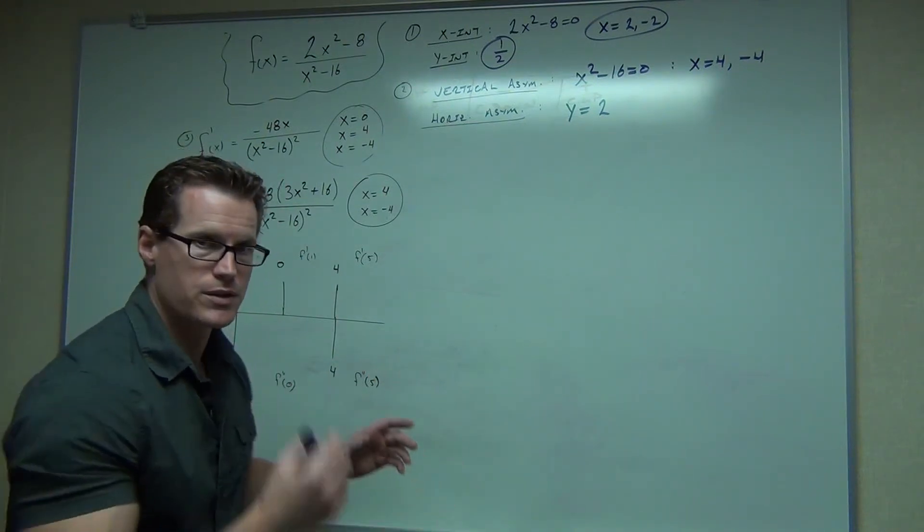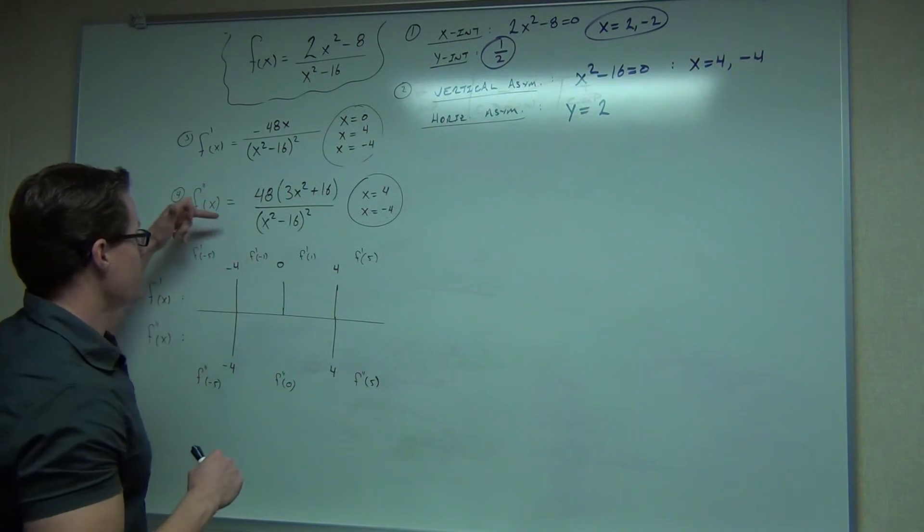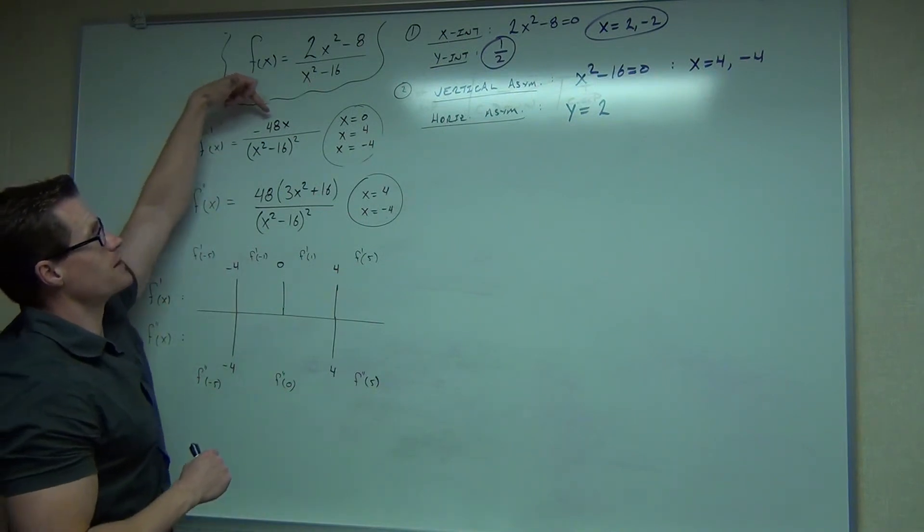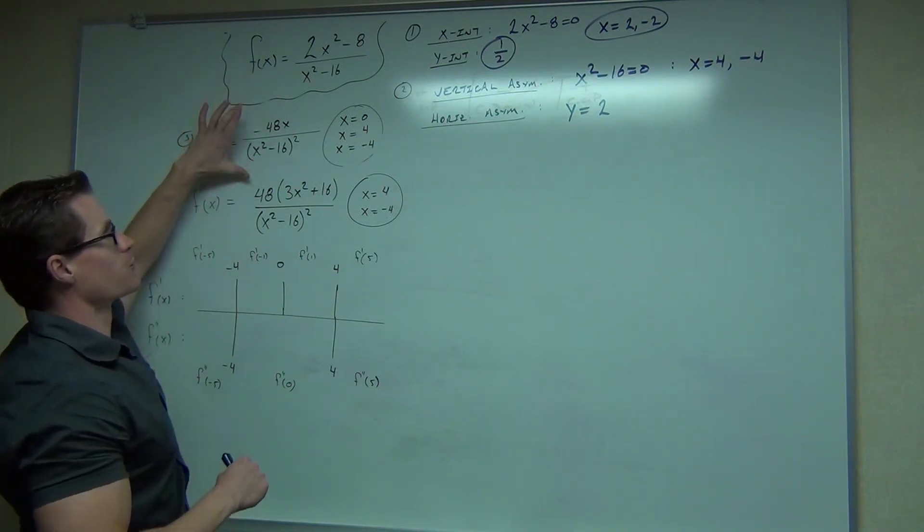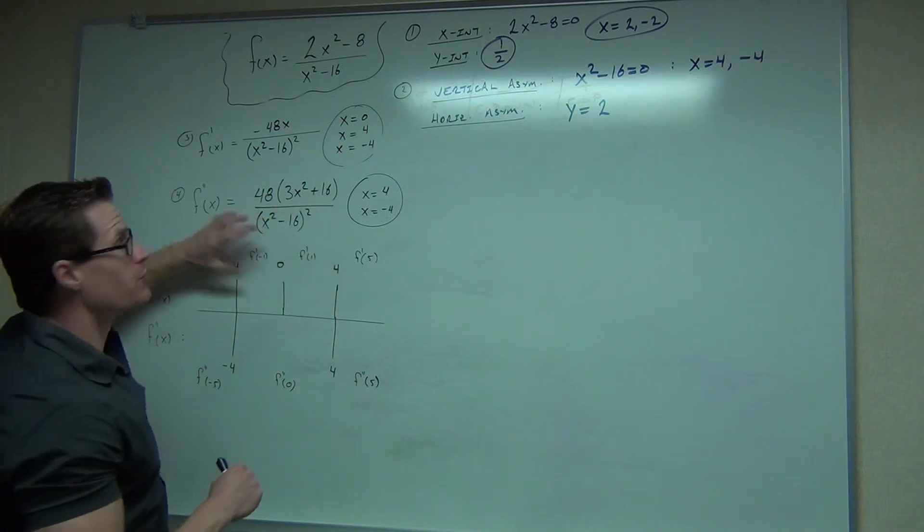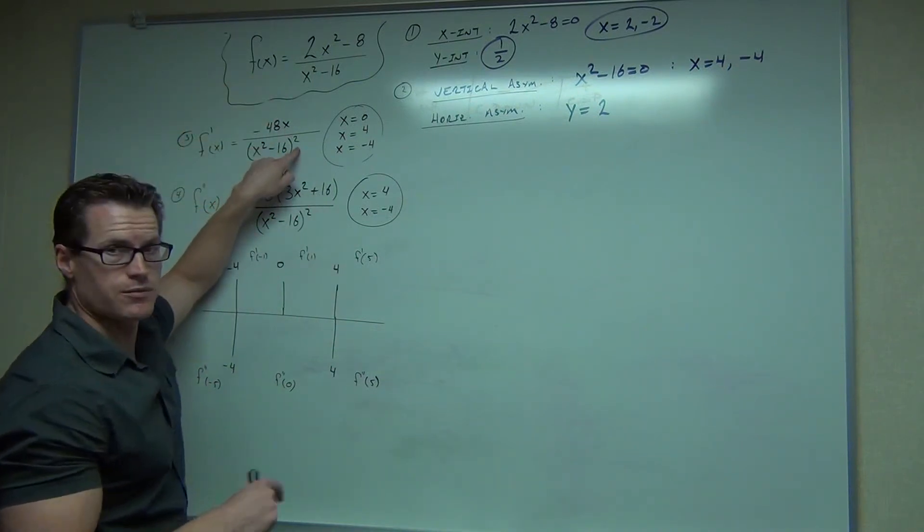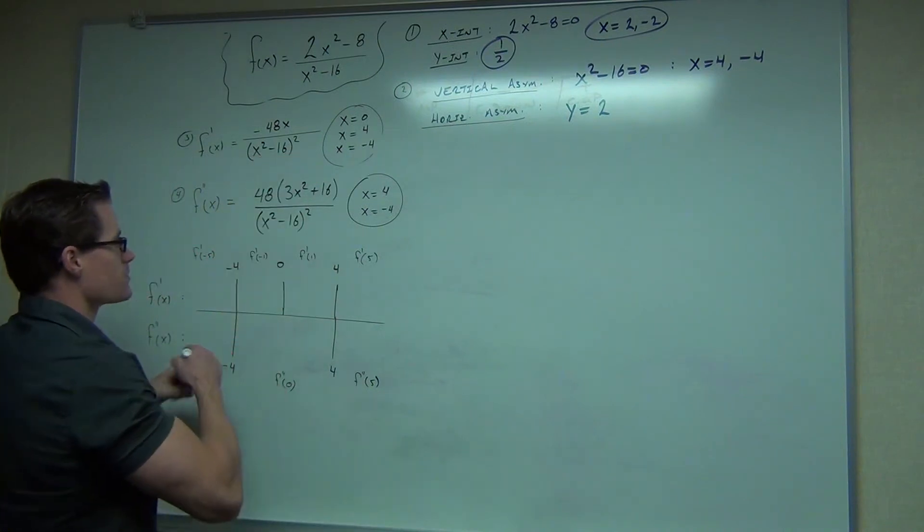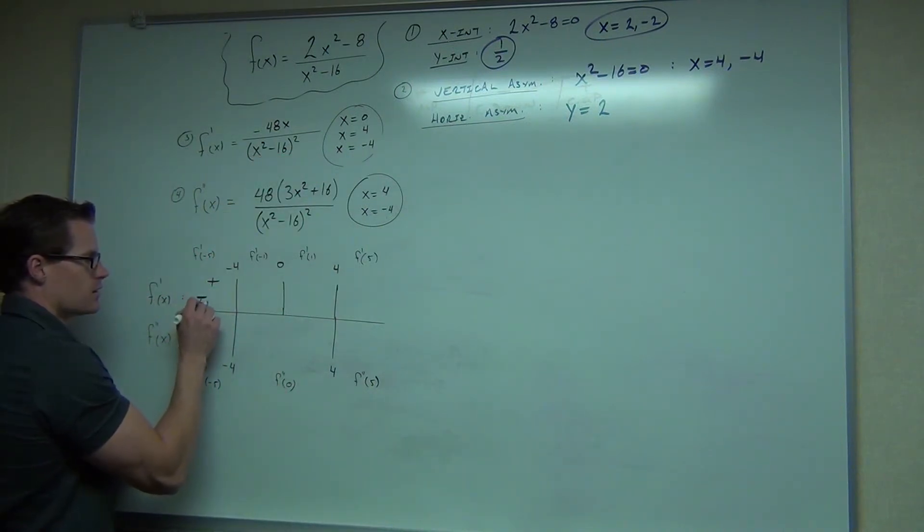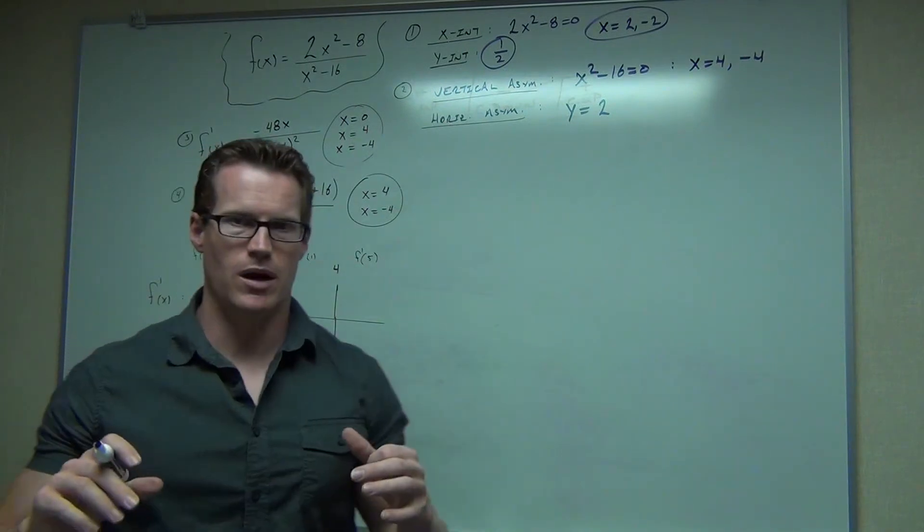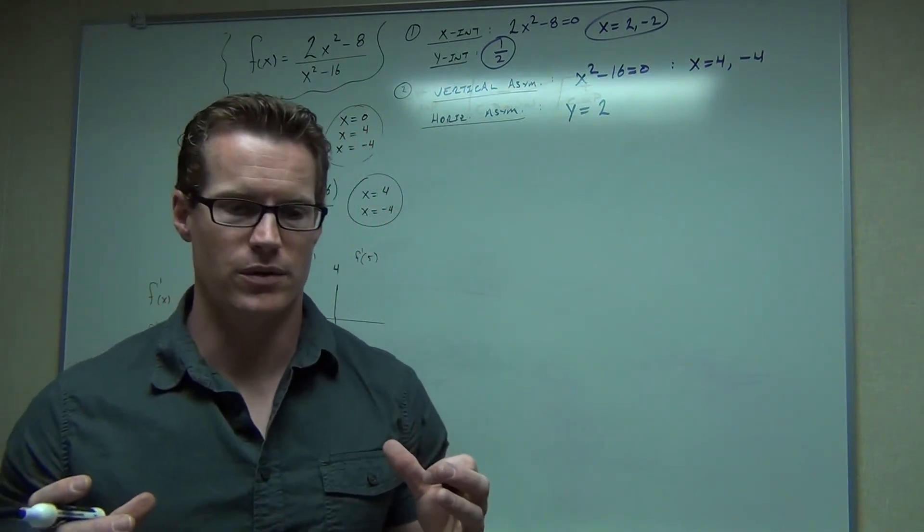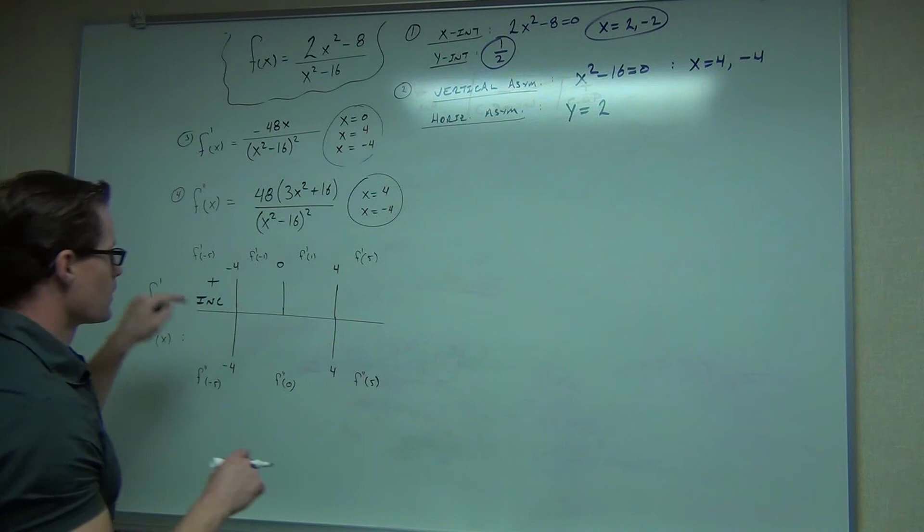So let's try this. If you want to try it at home, plug in your own points. But we're going to try f prime of negative 5. That's a negative times a negative. This is our first derivative. Again, remember, first derivative. Negative times a negative is a positive. Negative times a negative is a positive. That's a positive because it's squared. That means that this is positive.